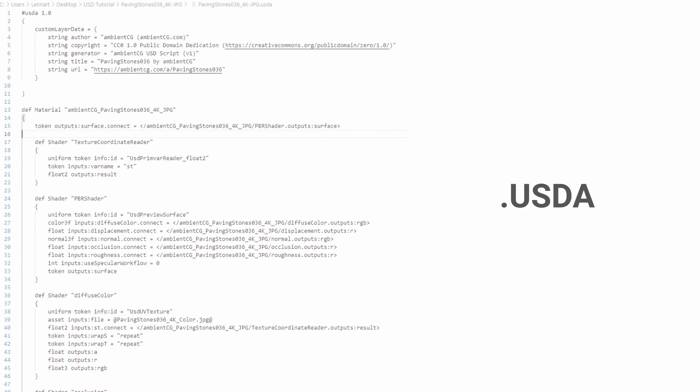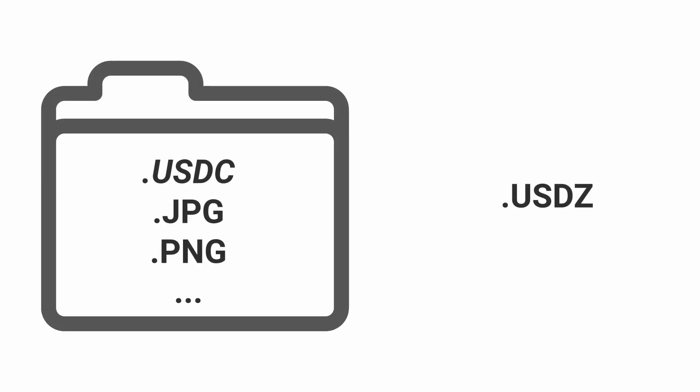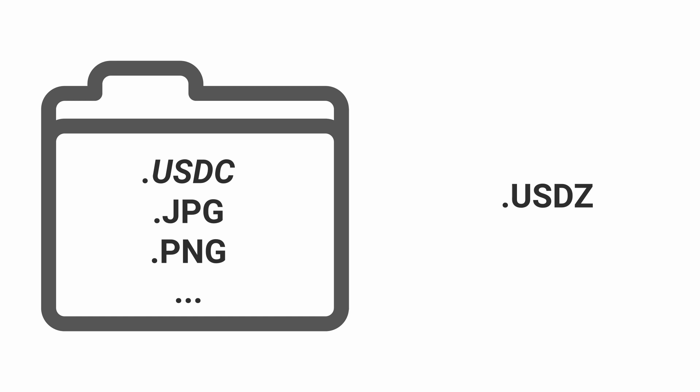USDA contains data in a human-readable text format. USDC contains the same data but in a binary format, which makes it more performant for large files. And then there is USDZ — a USDZ file is actually just a zip file which contains both a USDC file as well as all the external files, in this case texture maps, that the USDC file references.